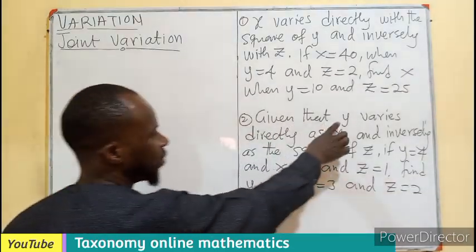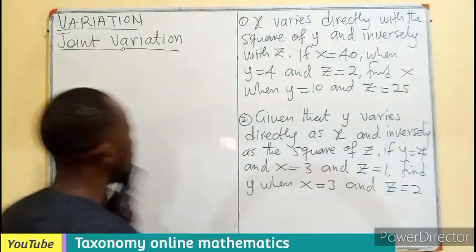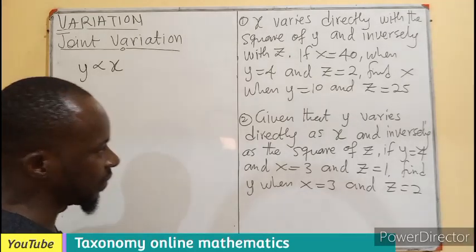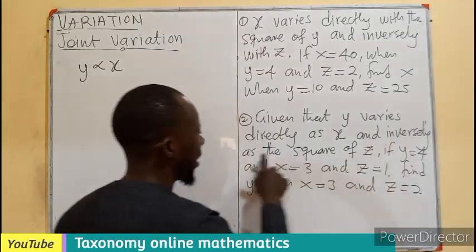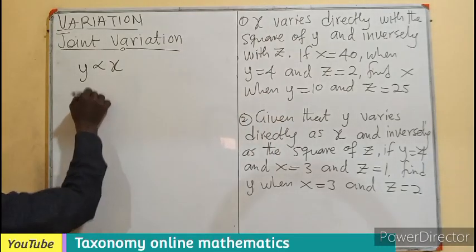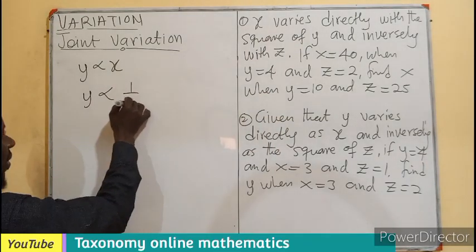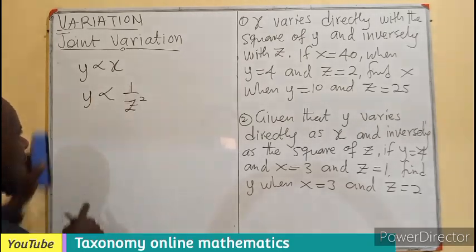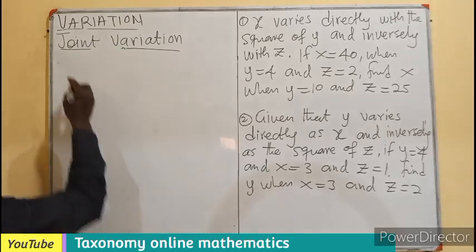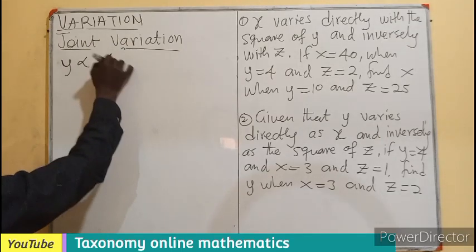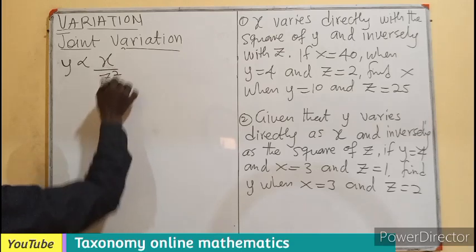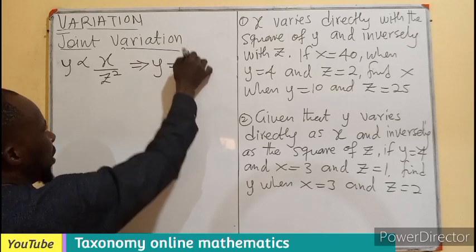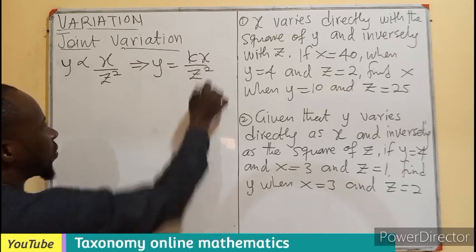Number 2: Given that Y varies directly as X and inversely as the square of Z. So Y will vary directly as X, and Y will also vary inversely as the square of Z. By combination, the X multiply the one over Z squared. So in all, Y will vary as X divided by the square of Z. Let's translate that into equation: Y equals KX over Z squared. That is our first equation.